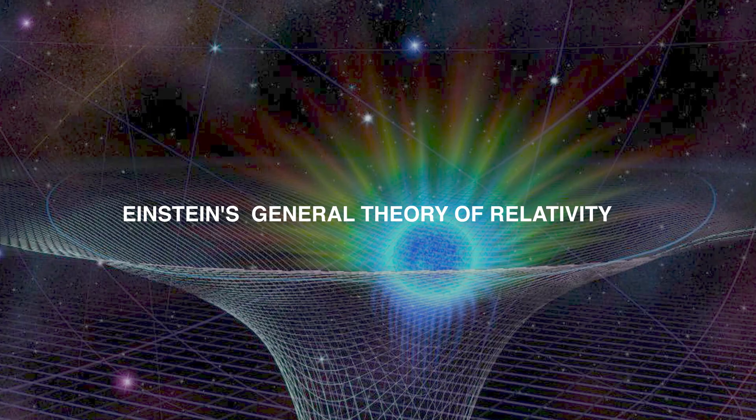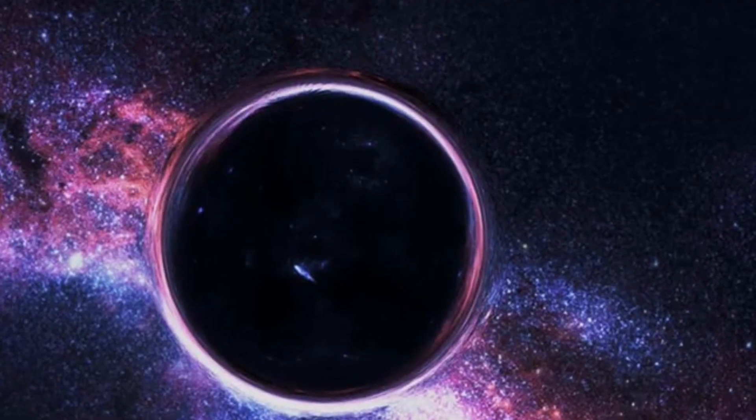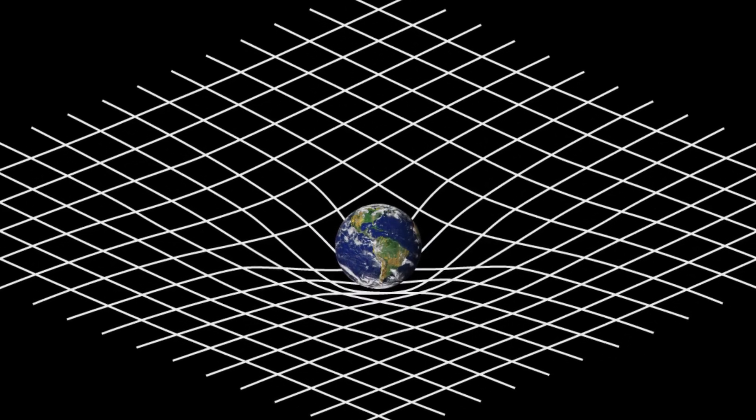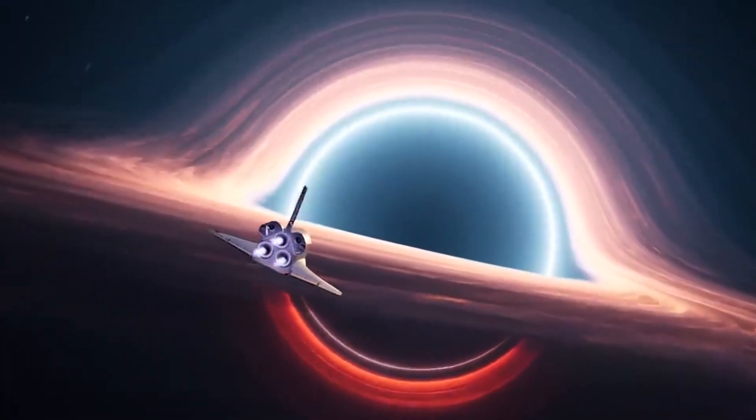According to Einstein's general theory of relativity, matter and energy have a profound impact on space, causing it to bend and stretch. The more massive an object is, the more space is stretched and bent around it.